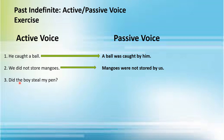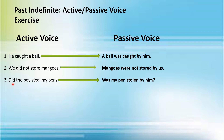Number three: 'Did the boy steal my pen?' This is the interrogative sentence of past indefinite tense — 'did' helps you understand this. The passive voice will be: 'Was my pen stolen by him?'